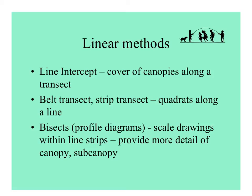Some sampling methods don't use quadrats. Instead, they use transects or lines. A line intercept uses a rope or tape measure to measure the amount of the line covered by different canopies. A belt transect or strip transect is kind of like a long quadrat, or you may do quadrats along a line.